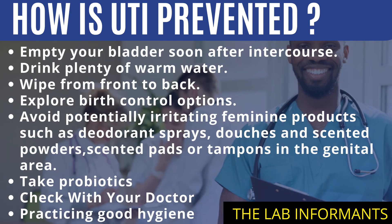How is UTI prevented? You can put these factors into place: empty your bladder soon after intercourse, drink plenty of water, when you go to the loo wipe from front to back, explore your birth control options and preferably consult your doctor. Avoid potentially irritating feminine products such as deodorant sprays, douches, scented powders, scented pads, or tampons in the genital area. Try taking probiotics, check with your doctor, and practice good hygiene.